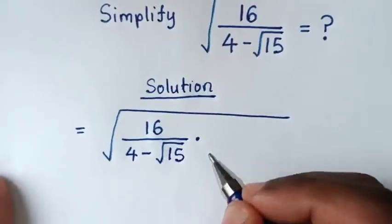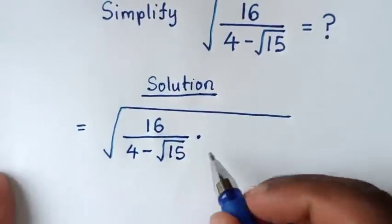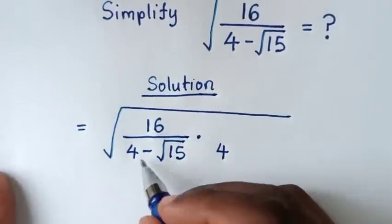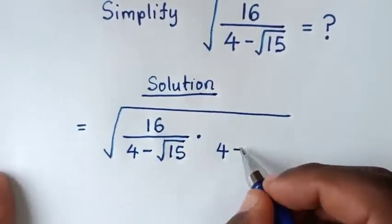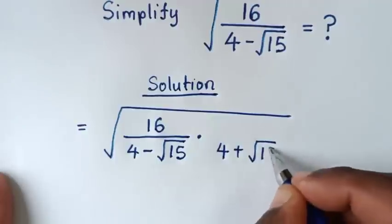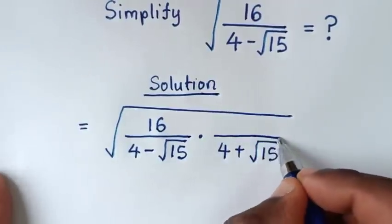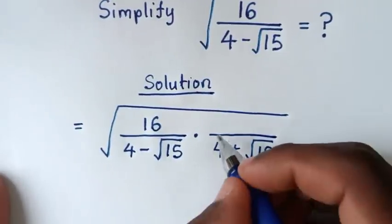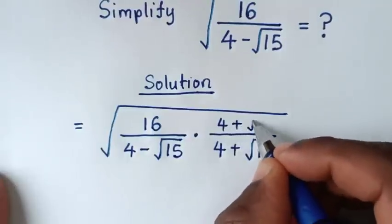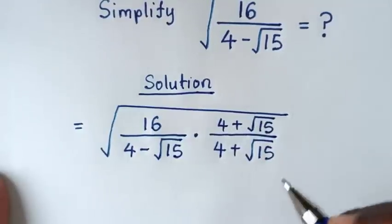Then times — from here to rationalize the denominator, we'll multiply by 4. Here we have minus, so it will be plus square root of 15. Then we'll multiply by this also in the numerator, so 4 plus square root of 15.